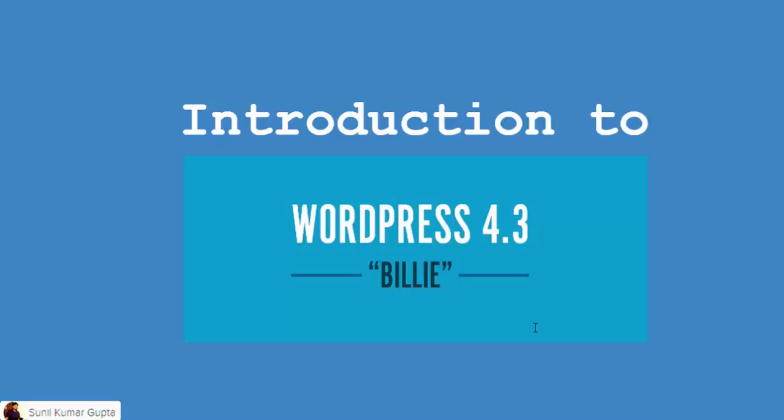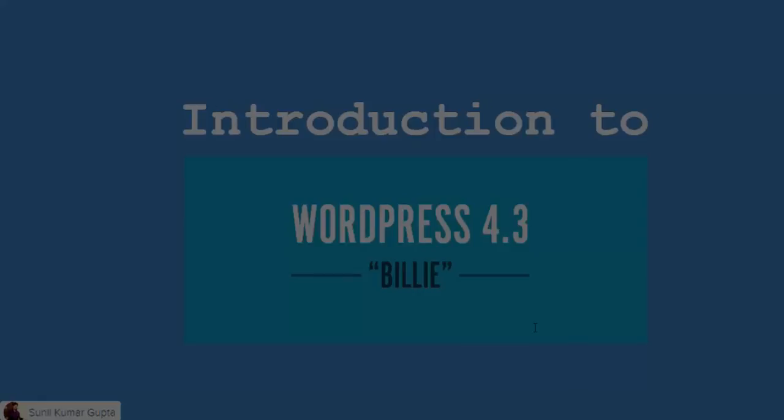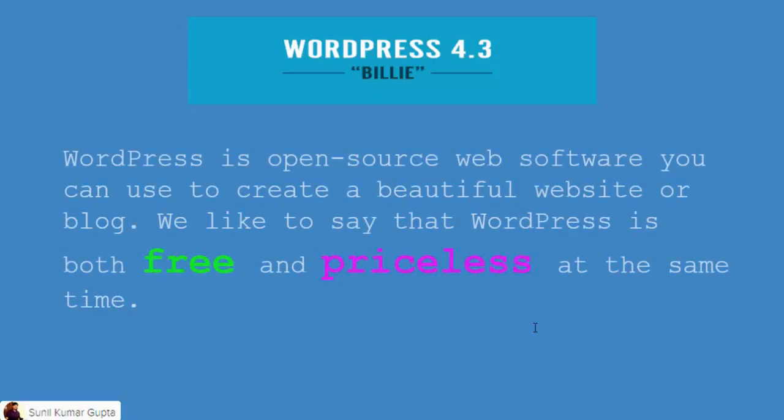So what is WordPress? WordPress is an open source web software. What I mean by web software is you can use WordPress to create a beautiful blog, website, and all those things you want to do on the web. It is basically an open source content management system that can be used to create a beautiful website or blog.